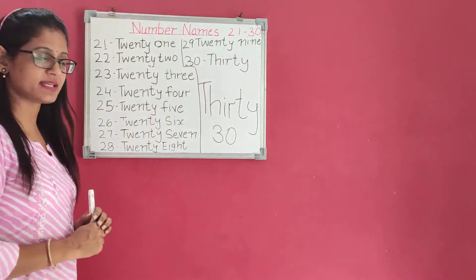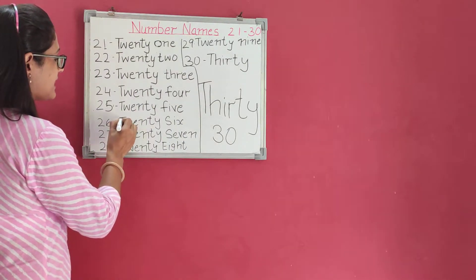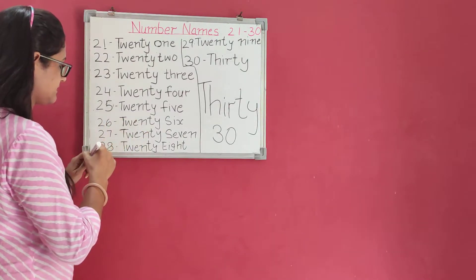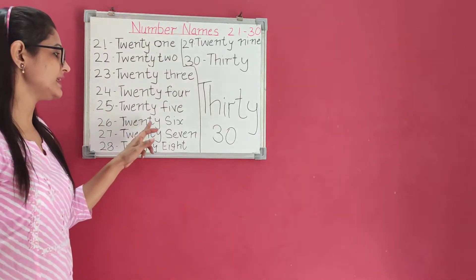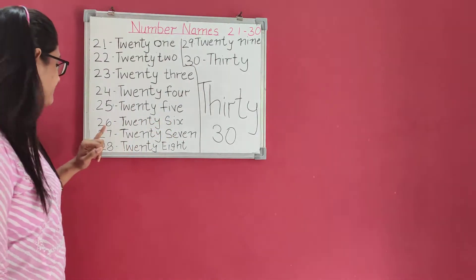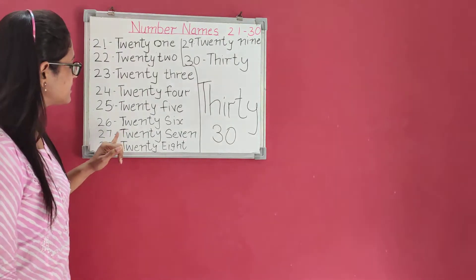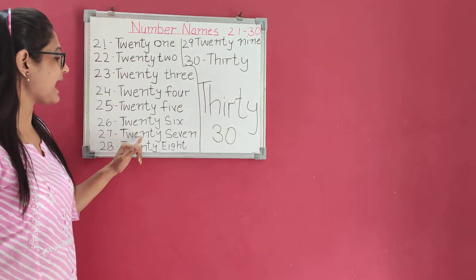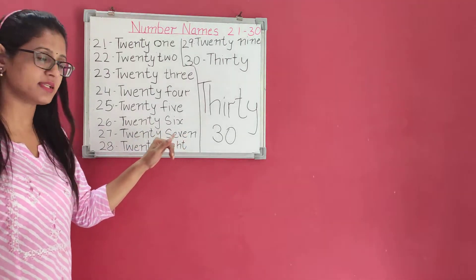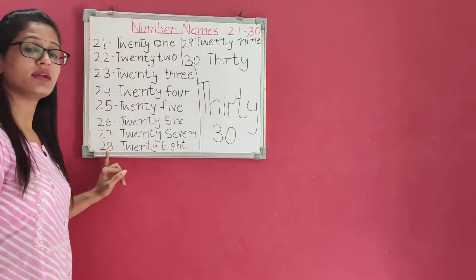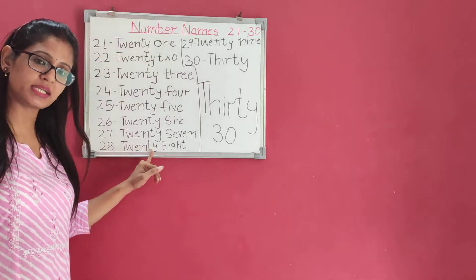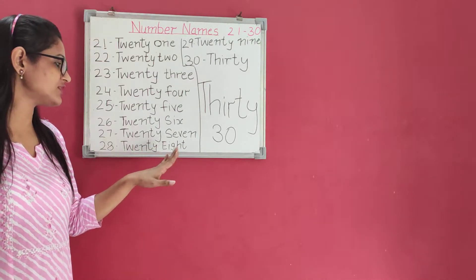Two six, twenty-six: T-W-E-N-T-Y, twenty, S-I-X, six. Twenty-seven: T-W-E-N-T-Y, twenty, S-E-V-E-N, seven. Twenty-eight: T-W-E-N-T-Y, twenty, E-I-G-H-T, eight.